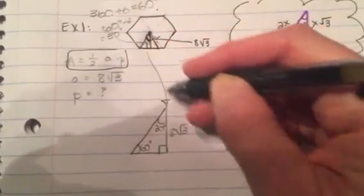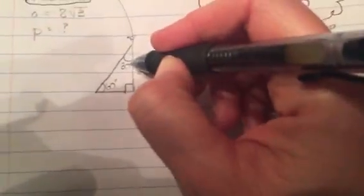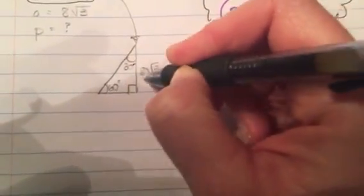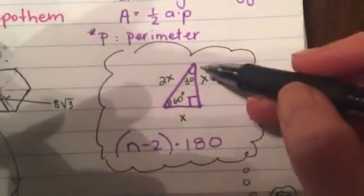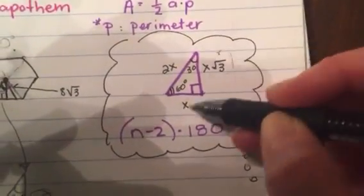So now if we kind of pull that out and enlarge it, it looks like this. So we have this 30 degree angle here, 60 degrees here, and 8 radical 3, the given length there. Then going back up here, we know now if this is x radical 3, this side is just x. So in other words, this is 8 radical 3, so this would be 8.